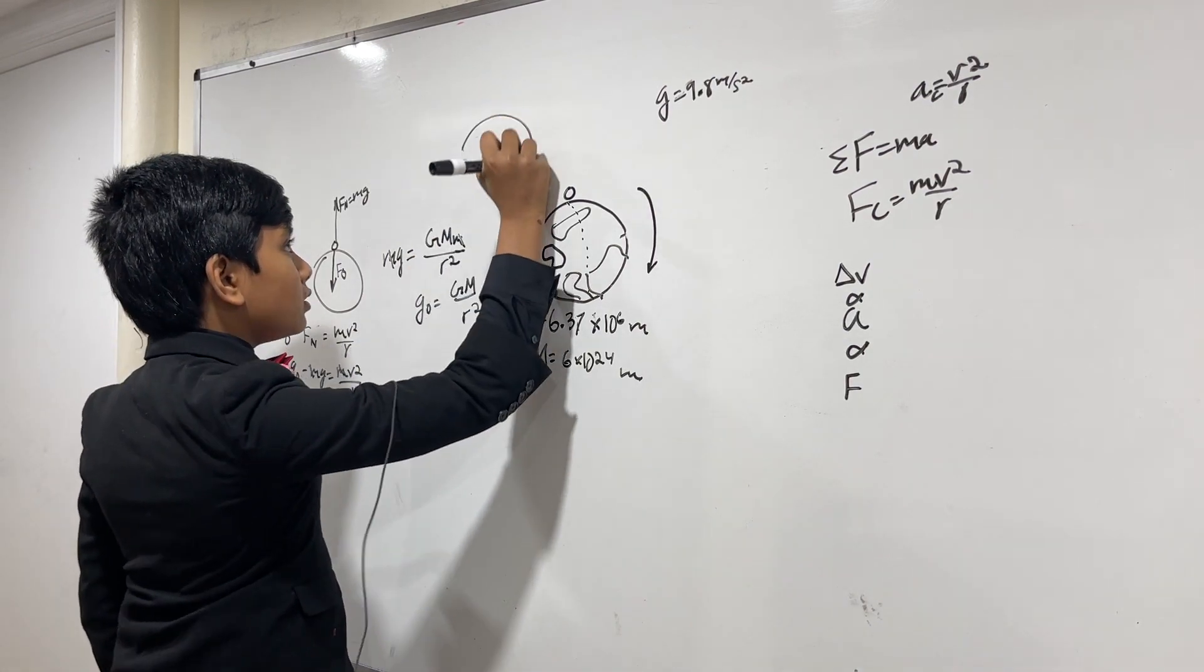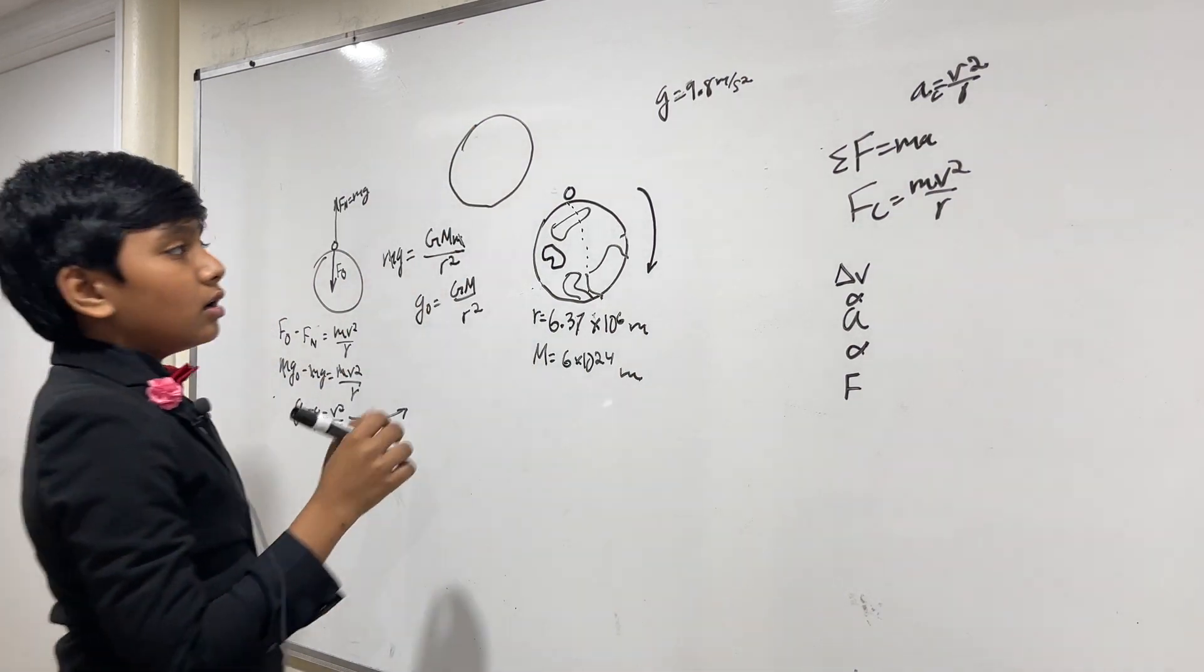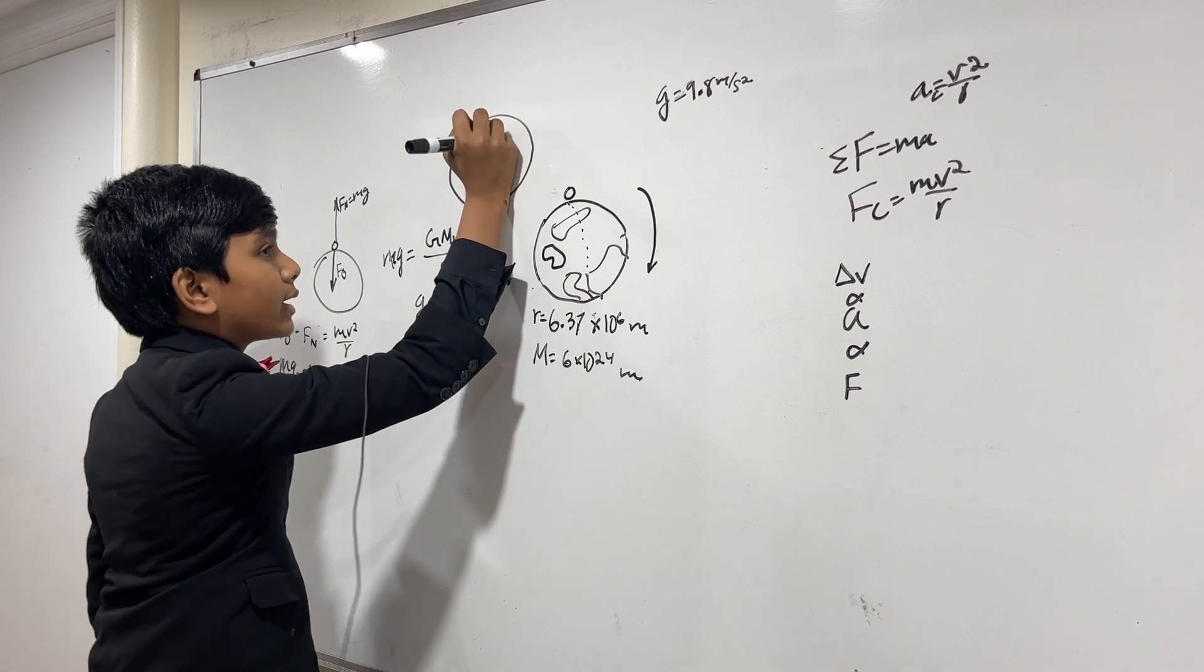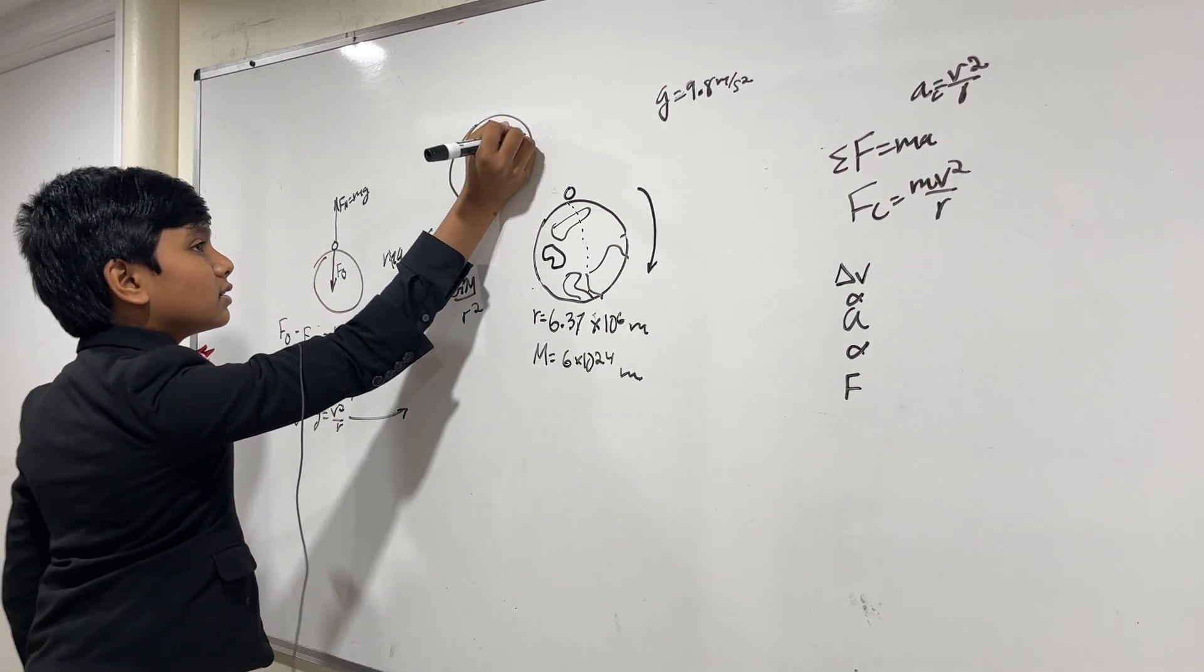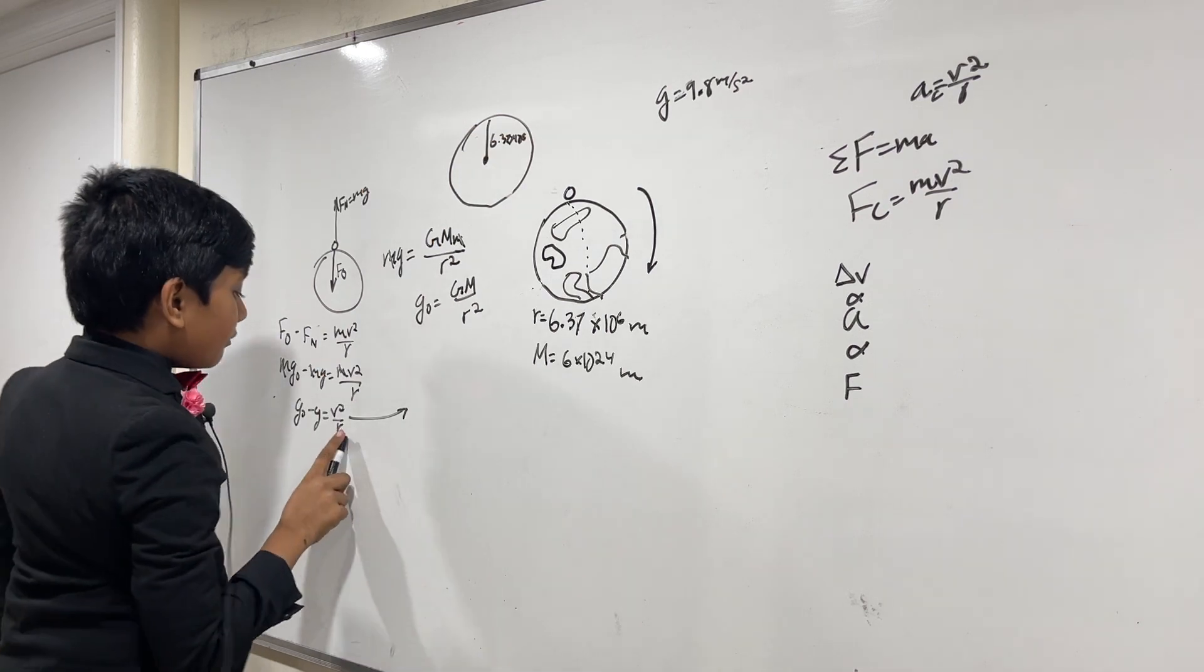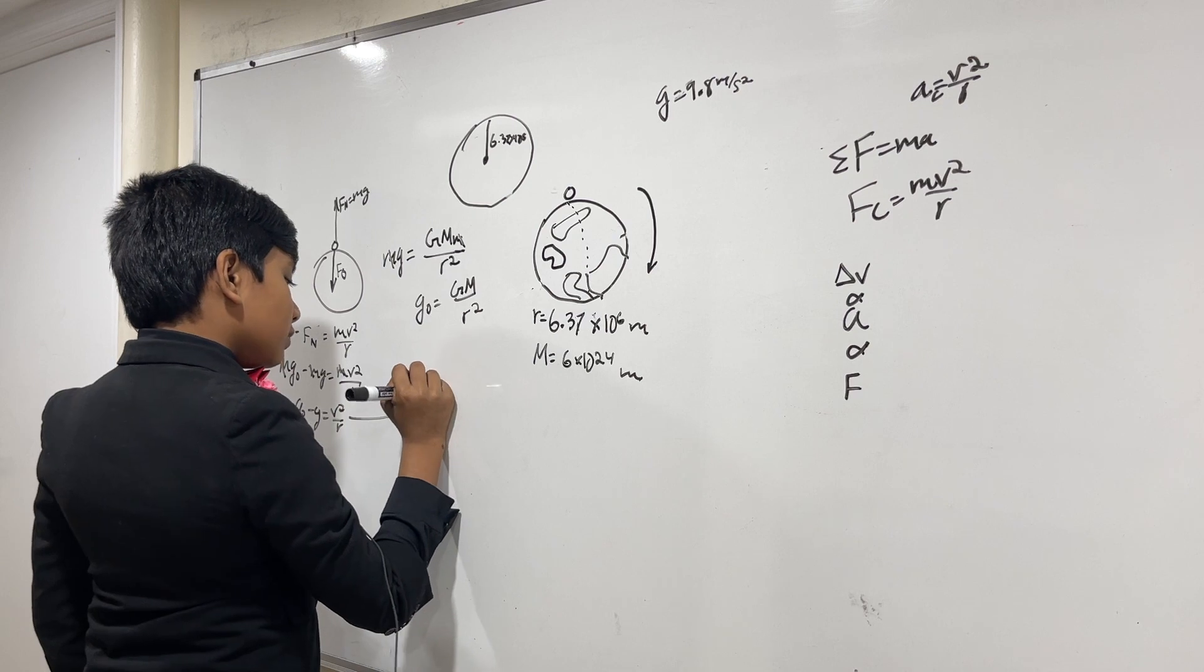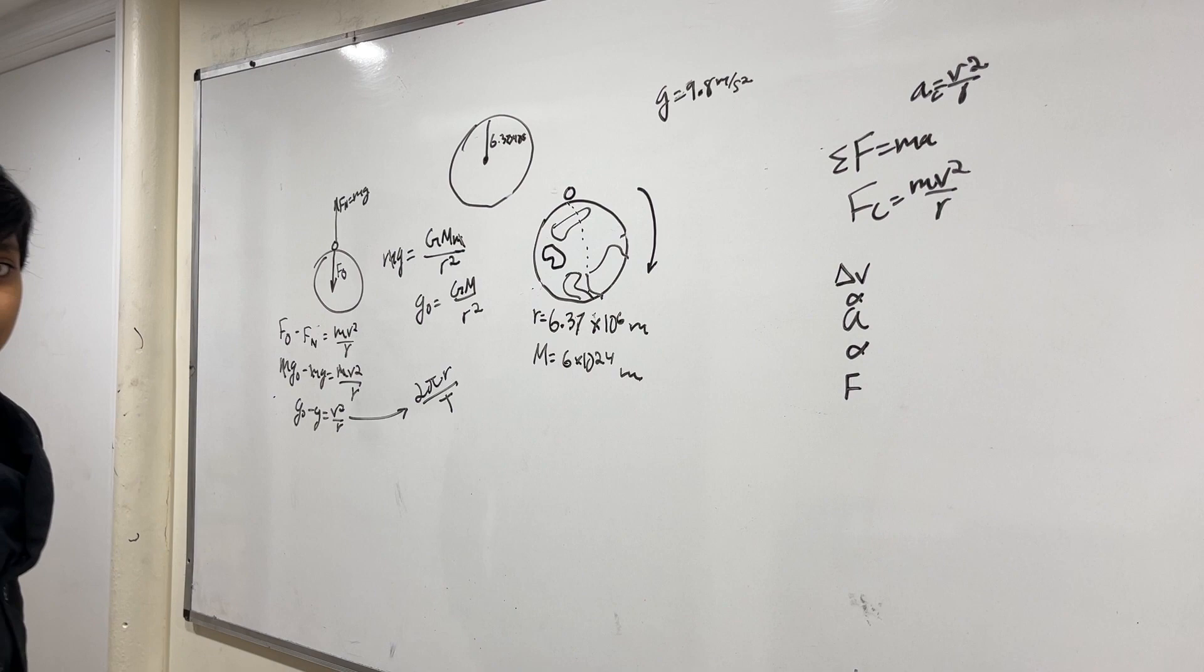Well, in the equator, the radius over here is basically the same as Earth's total radius. So, that would be 6.37 times 10 to the sixth. So, that means if we have V squared over R, V would be 2 pi R over big T.